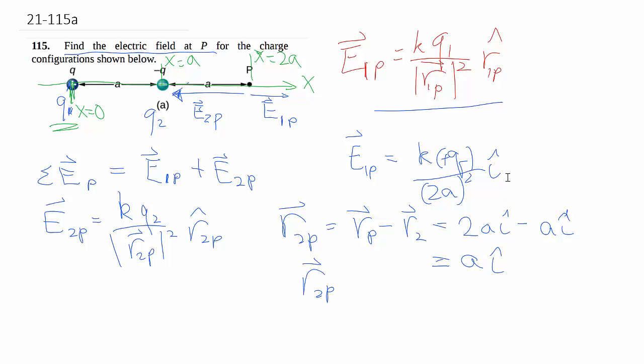Again, being a simple 1D case, we know that the magnitude is simply a and the unit vector is i hat. So now we can sub things in.